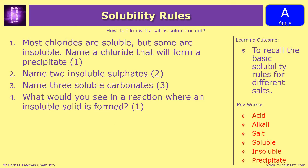For the exam you are going to have to remember most of those rules, so it would be a good idea to get them written down and keep looking through them. Have a go at these four questions: number one, most chlorides are soluble but some are insoluble - name one chloride that will form a precipitate. Number two, name two insoluble sulfates. Number three, name three soluble carbonates. And number four, what would you see in a reaction where an insoluble solid is formed? Pause the video and have a go now.